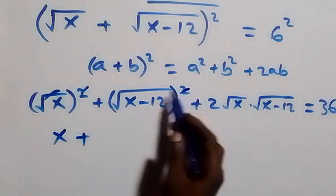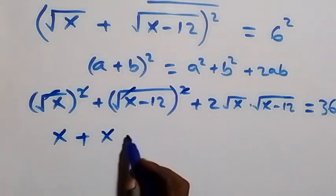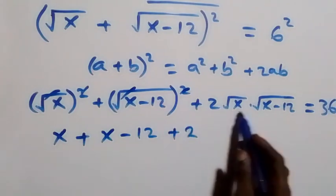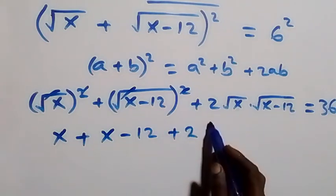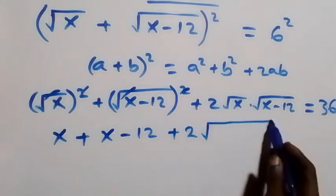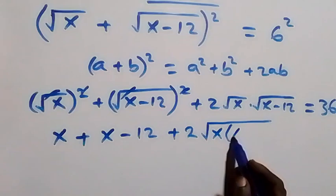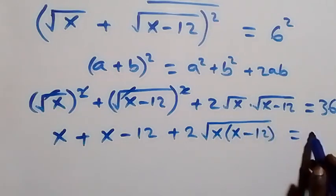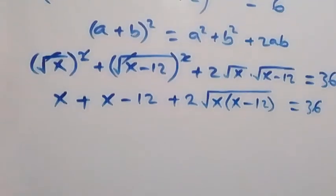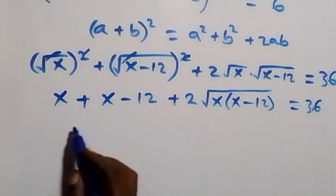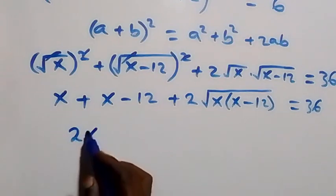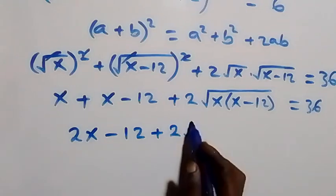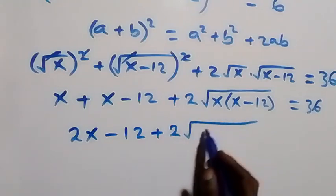The square cancels the square root, giving us x. Also, square cancels square root, giving us x minus 12. Then plus 2 multiplied by — bringing this together inside one root — we have square root of x times (x minus 12), equals 36. That is x plus x, which is 2x, minus 12, plus 2 times square root of x(x minus 12).